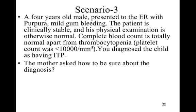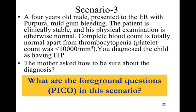Let us move to another scenario. A four-year-old male presented to the ER with purpura and mild gum bleeding. The patient is clinically stable and his physical examination is otherwise normal. Complete blood count is totally normal apart from thrombocytopenia. The platelet count was less than 10,000 per cubic millimeter. You diagnose this child as having ITP — idiopathic thrombocytopenic purpura. The mother asked how to be sure about the diagnosis. Reading the scenario, we find the mother is asking about diagnostic certainty, so this PICO is PICO diagnosis.